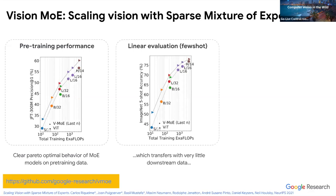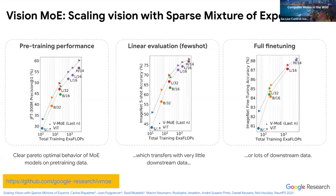The same benefits can be seen with linear few-shot transfer downstream. Fine-tuning is known to be more challenging with mixture of experts, but these models fine-tune well at small and medium scales. At larger scale, however, we saw some diminishing returns — a topic I'll return to later in the talk.